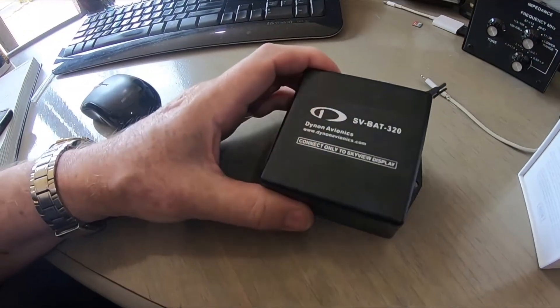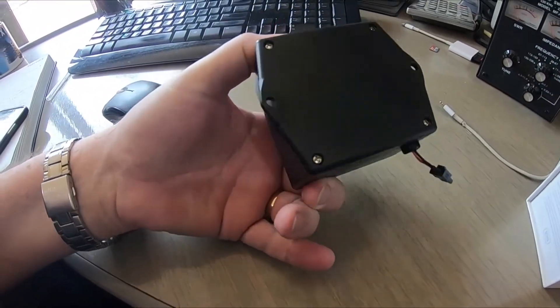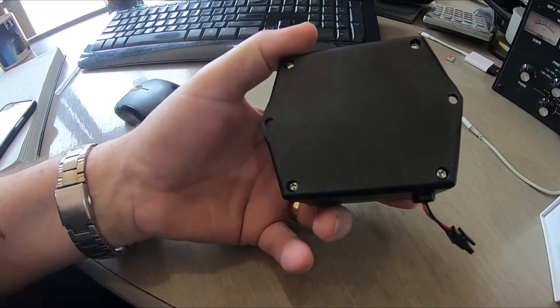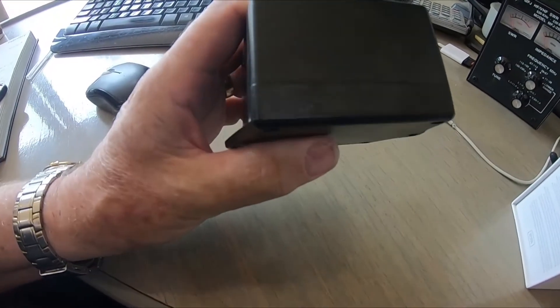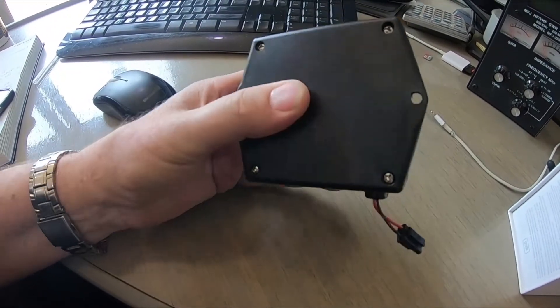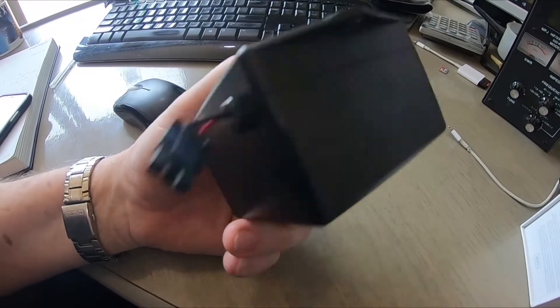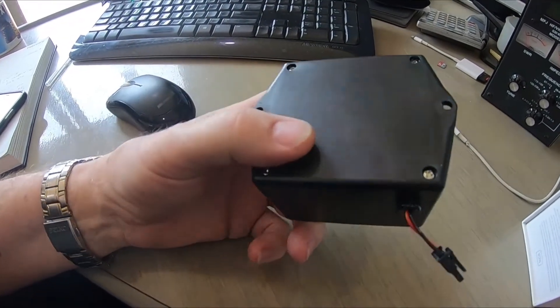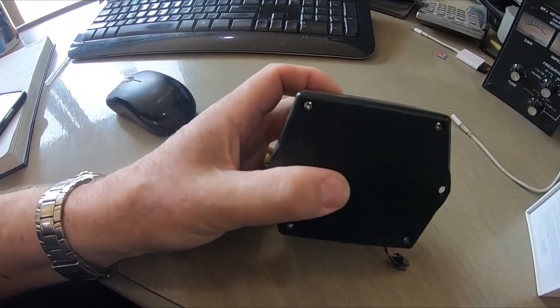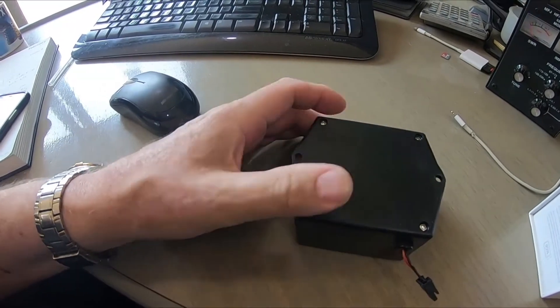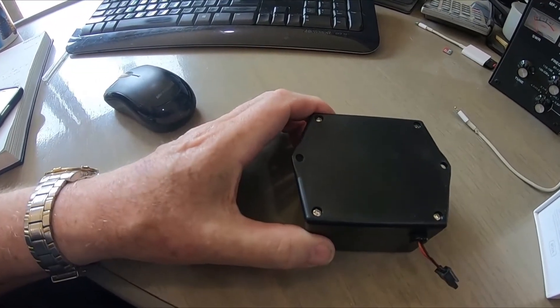So the first thing we'll note about it when we turn it over, nothing unremarkable, just four Phillips head screws. And because I've already done it once, I know that there's no glue or anything like that holding the two pieces of the case together. So we'll just pop those four screws out and have a look and see what's on the inside.